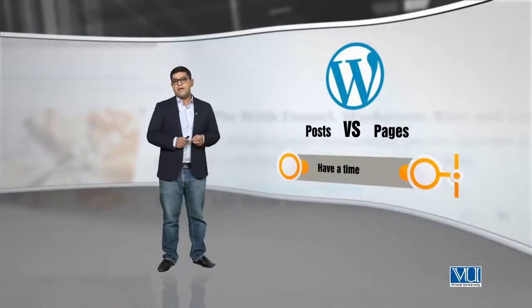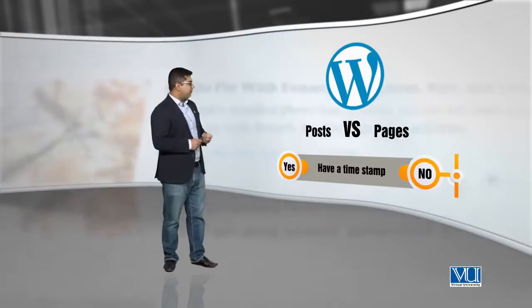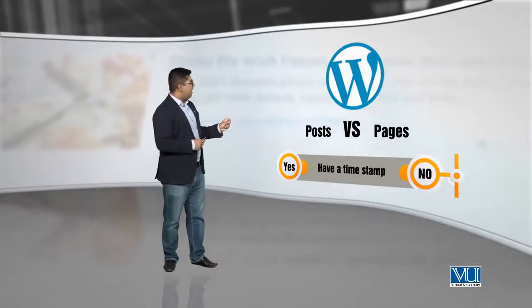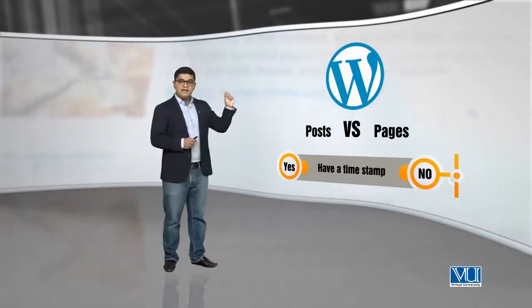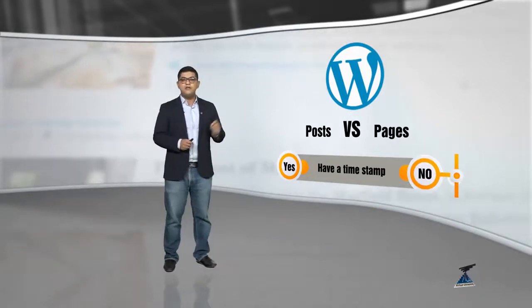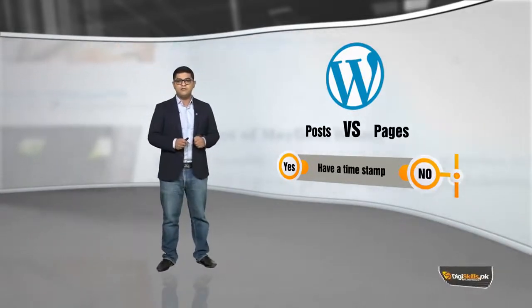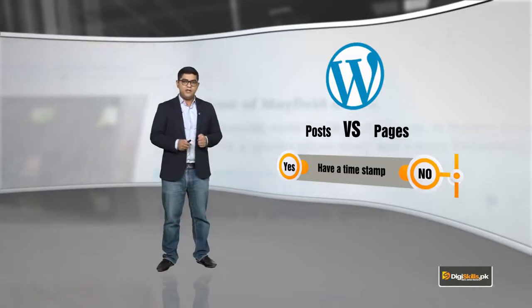Let's talk about timestamps. Timestamps are times or dates which are assigned to a particular page or post. Pages usually do not have a time shown to search engines, but posts usually have a very specific timestamp so that the search engine knows how fresh or stale a content piece is.